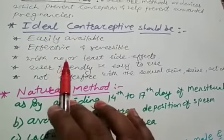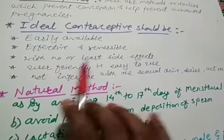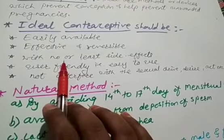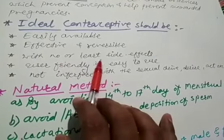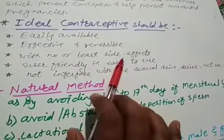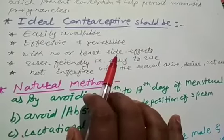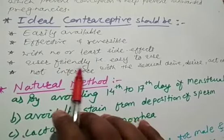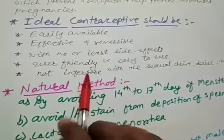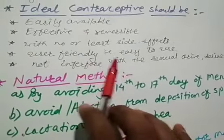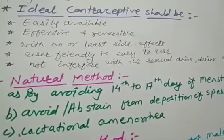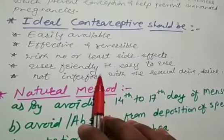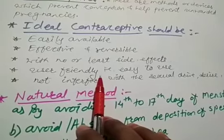The next thing for an ideal contraceptive is that it should have no or least side effects — meaning it should have no side effects, or if it does, they should be minimal and very less harmful to the health of the male or female. It should also be user-friendly and easy to use, so that many people can utilize it without any hesitation.